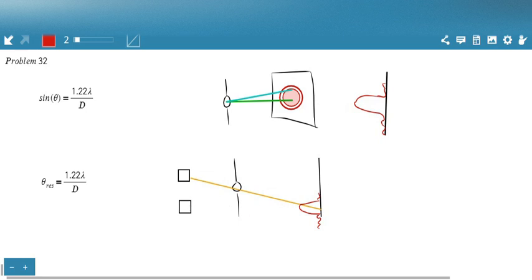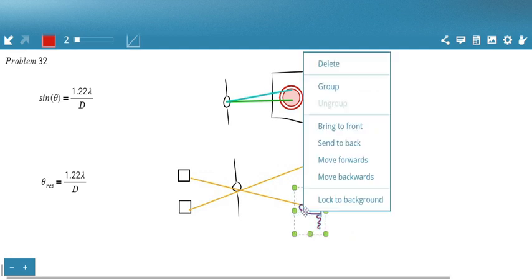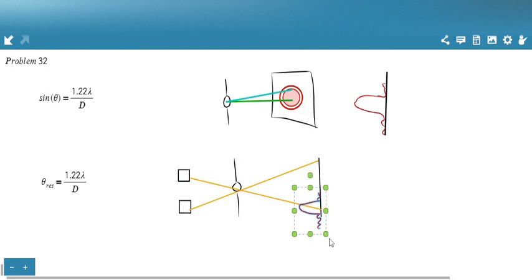And the intensity here on the screen is going to look something like this. And the same thing is going to happen for this second object. This second object is also going to be going through this slit here. And it's going to form a similar pattern on the other side. So at this angle, these two objects are clearly distinct on the screen. We have two regions of intensity.